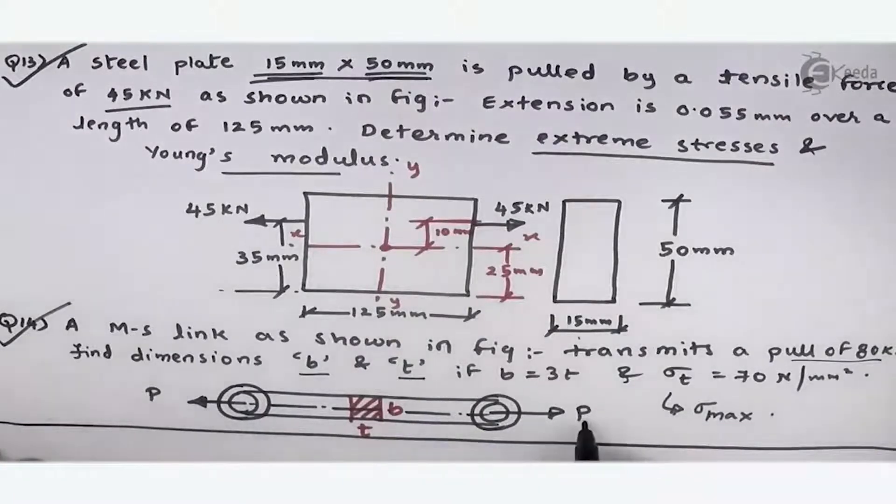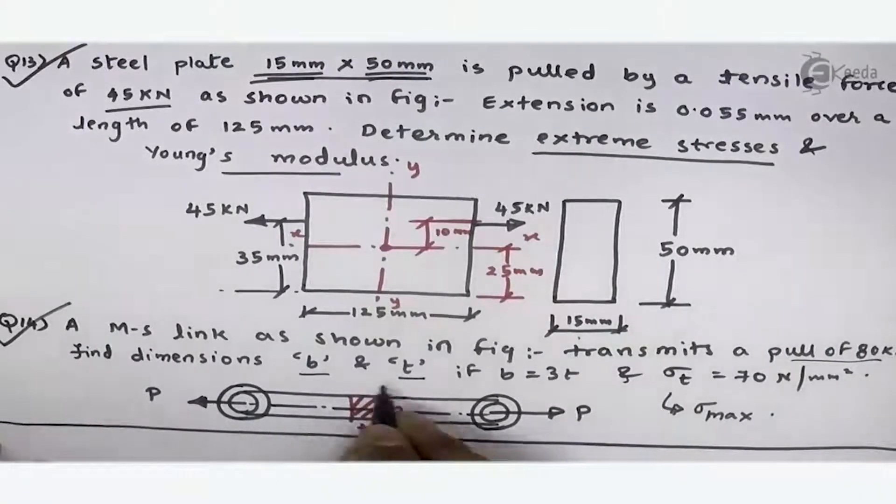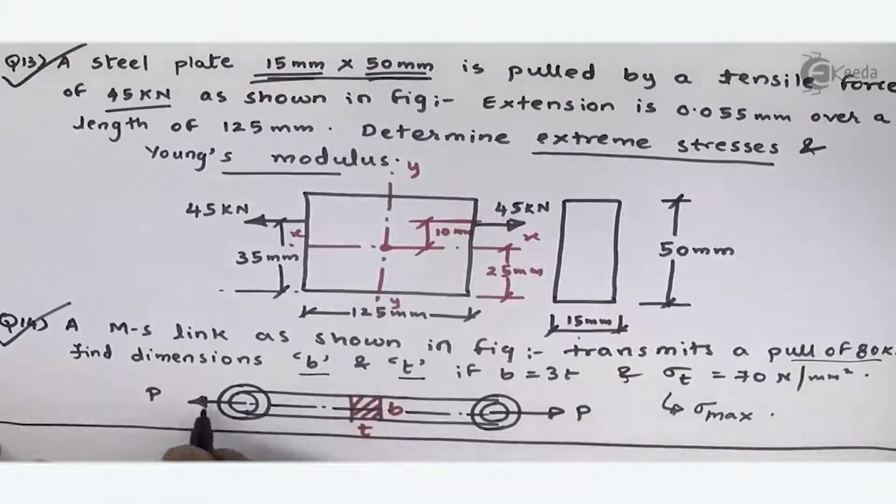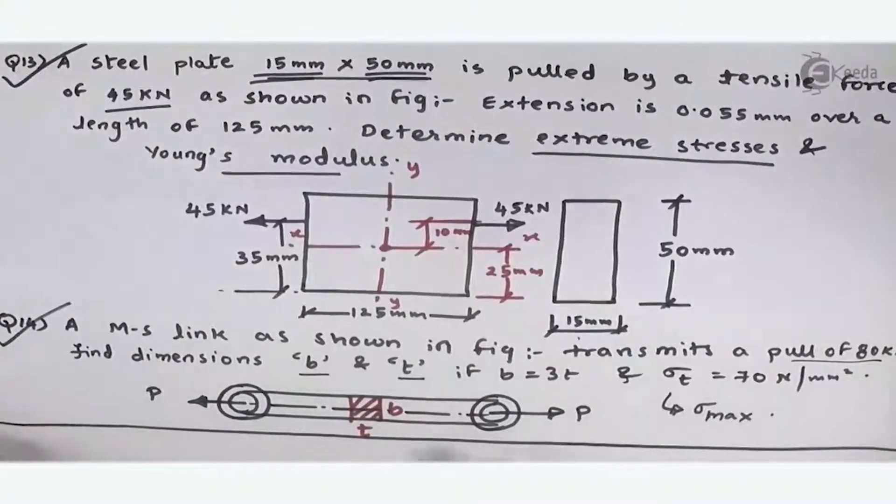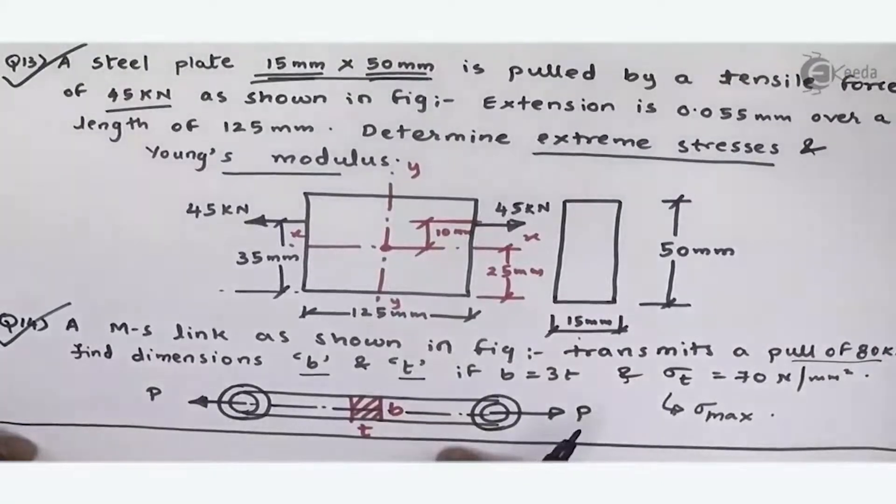This load is passing through the axis. Load and axis—there is no distance between them. The effect on this rectangular section because of the load: it is getting pulled. So it means there is only direct stress. There is no bending. Why is bending not there?